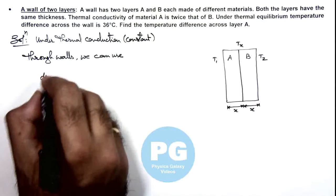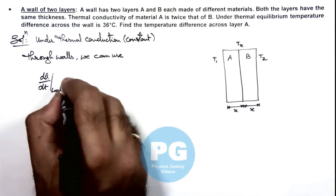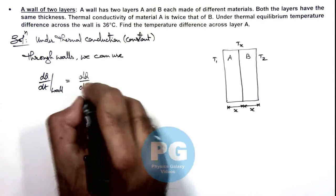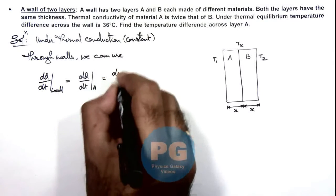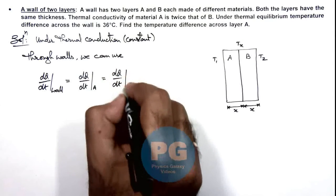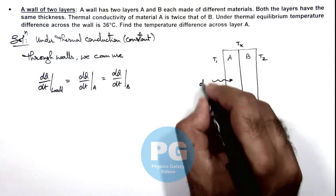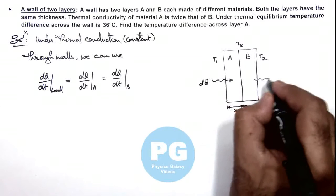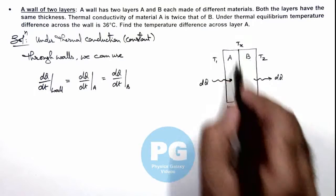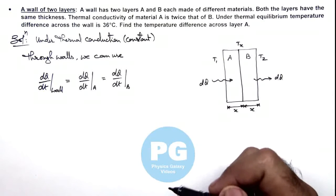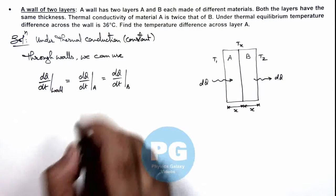The rate of flow of heat dQ/dt through the wall can be written as the rate of flow of heat for layer A, and the same is dQ/dt through layer B, because the amount of heat getting in is the same amount coming out, and the temperature of the junction can be considered constant.